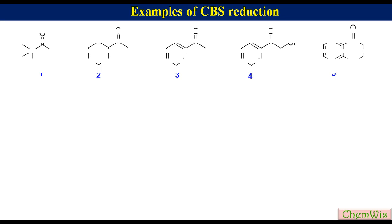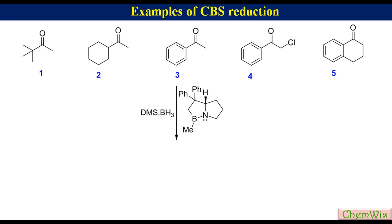Let's have some examples. Suppose we have to reduce these five ketones by DMS borane in the presence of this CBS catalyst. The first thing we will do is find out the absolute configuration of the CBS catalyst. The absolute configuration of this CBS catalyst is S.